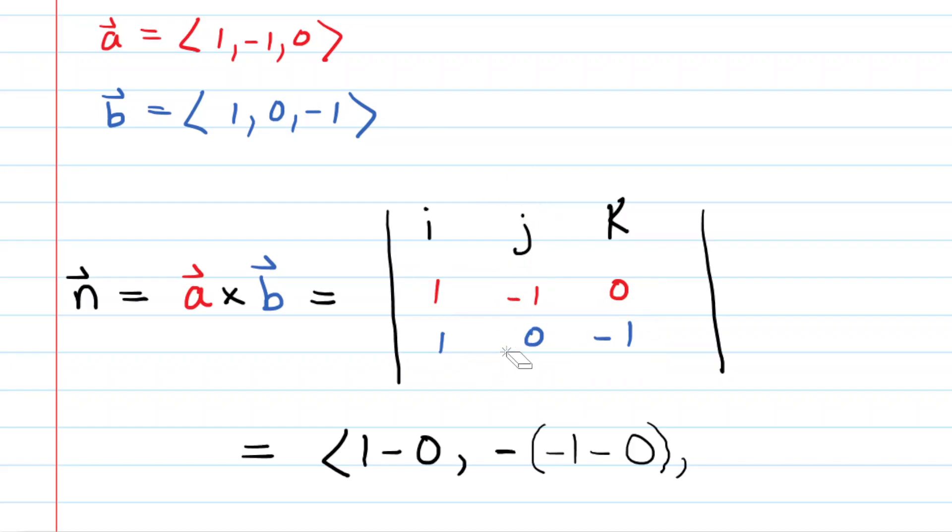And then we're going to cover up the third column and do another and final 2 by 2 determinant. So we're going to have 1 times 0, which of course is 0. And then 1 times negative 1, which is negative 1. We're going to subtract those. So you're actually going to subtract a negative. We'll end up adding that. So this will be the normal vector.